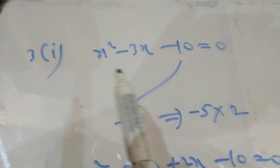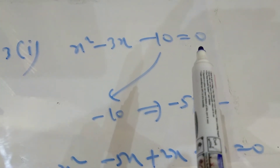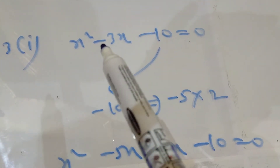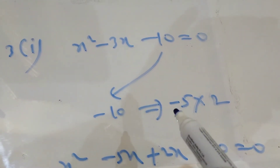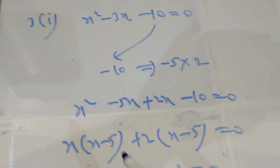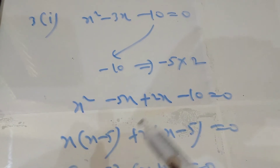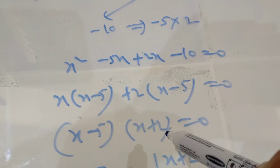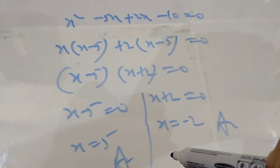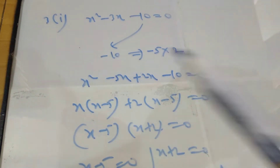Look at question 3, first part: x² − 3x − 10 = 0. The −10 can be written as −5 × 2. Since I need a minus sign, the bigger number gets the minus: −5x + 2x − 10 = 0. Grouping: x(x − 5) + 2(x − 5) = 0, so (x − 5)(x + 2) = 0. Applying the zero product rule: x = 5 and x = −2 are the two answers for question 3 first part.